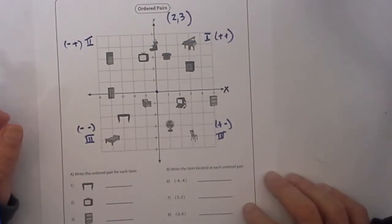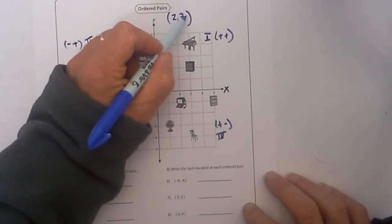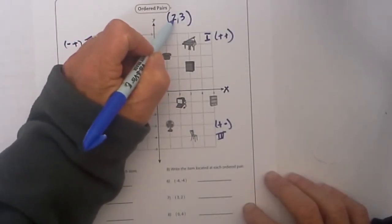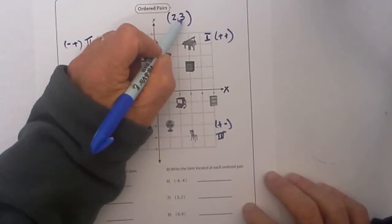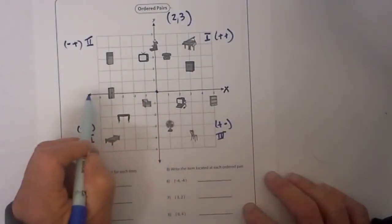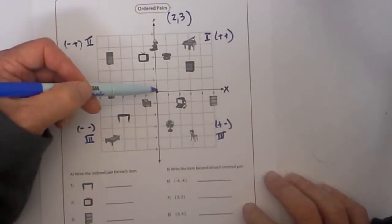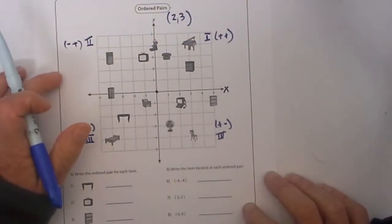When plotting ordered pairs always start at the origin. The x coordinate is the first number in the ordered pair. We have this ordered pair so the x would be the 2 and the y coordinate is always the second number. The x coordinate shows you how much you move left and right and the y coordinate tells you how much you move up and down.